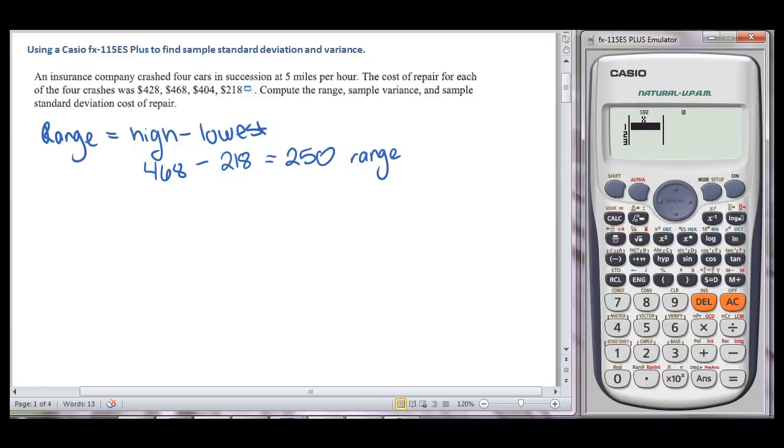We need to enter in, so we've got 428, hit equal to go to the next line, 468, again hit equal to go to the next line, 404, and equal, and 218. So 218 and equal.